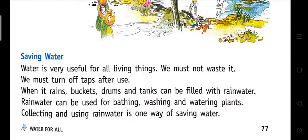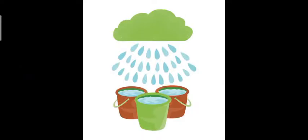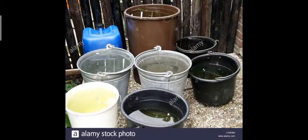When it rains, you can put buckets outside and collect the rainwater because rainwater is mostly clean. You can also use it for washing clothes, watering your plants, or for other purposes. Collecting and using rainwater is one way of saving water.